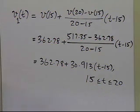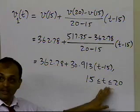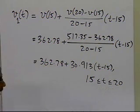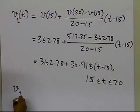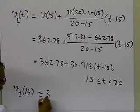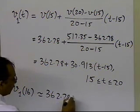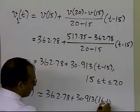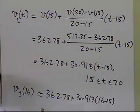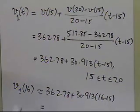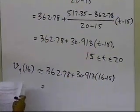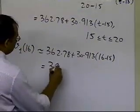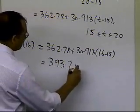Now, since the value of 16 is between 15 and 20, I can use that to find out the velocity at 16. So the velocity at 16 is approximately equal to 362.78, plus 30.913, times 16, minus 15, and that value here turns out to be 393.7 meters per second.